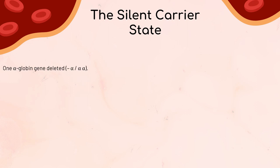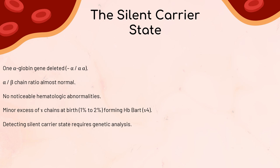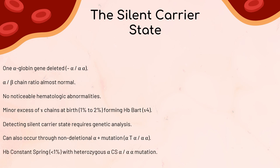In the silent carrier state, one of the alpha-globin genes is deleted, leaving three functional alpha-globin genes (-alpha / alpha-alpha). The alpha-to-beta chain ratio is almost normal, and there are no noticeable hematologic abnormalities. At birth, there's a minor excess of gamma chains, which combine to form tetramers of hemoglobin BART (gamma-4), in the range of 1% to 2%. Detecting the silent carrier state reliably requires genetic analysis. This state can also occur through a non-deletional alpha-plus mutation (alpha-T-alpha / alpha-alpha). In the case of heterozygous mutation alpha-CS-alpha / alpha-alpha, hemoglobin constant spring makes up less than 1% of total hemoglobin.